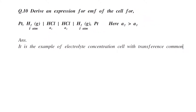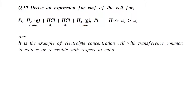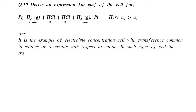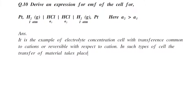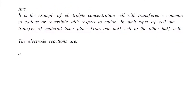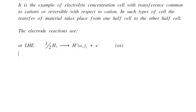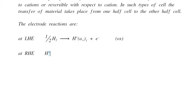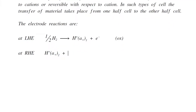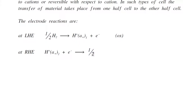In such a cell, the transfer of material takes place from one half cell to another. The electrode reactions are: at the left-hand electrode, half of hydrogen gas is converted into H+ ions of activity a1, and an electron is liberated — that is the oxidation reaction. At the right-hand electrode, H+ ions of activity a2 combine with electrons.